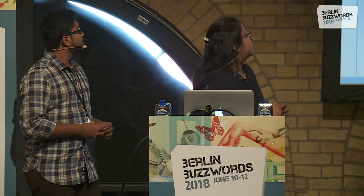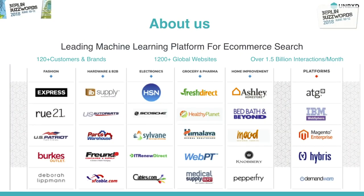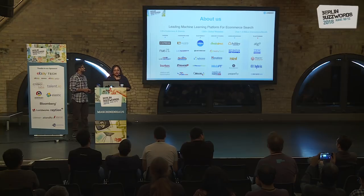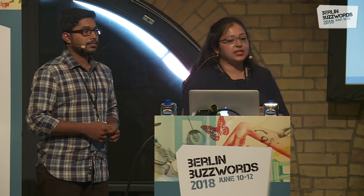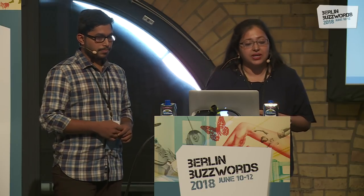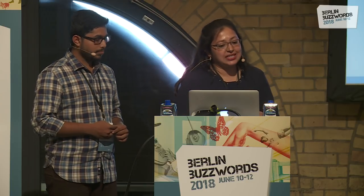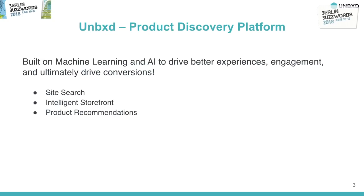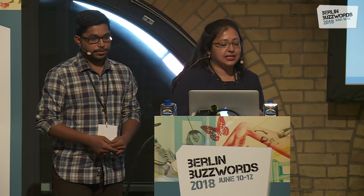A little about Unboxed and what we do: we are a leading machine learning platform for e-commerce search, present across verticals like fashion, hardware, electronics, groceries, and home improvements. We are integrated with many platforms, enabling us to collect data at the scale of 1.5 billion interactions per month. Our product offerings include site search, which powers client websites and optimizes queries tracking CTR and CVR; an intelligence storefront tool for merchandisers to control promotions and analytics; and ML-driven personalized product recommendations.